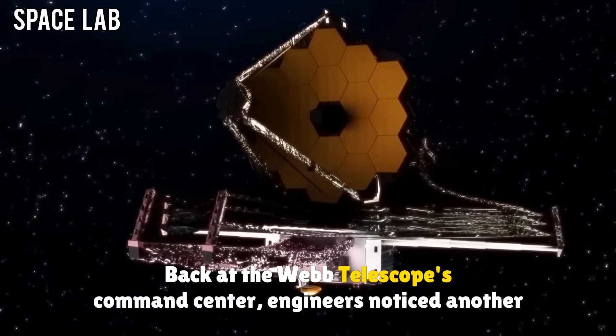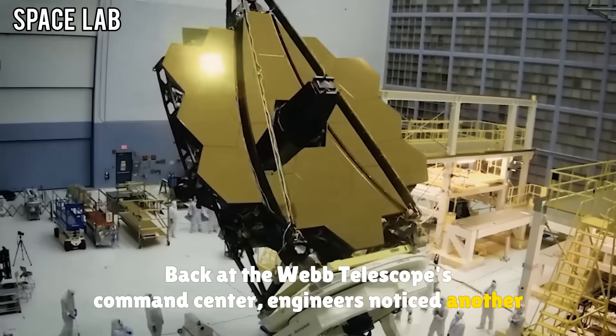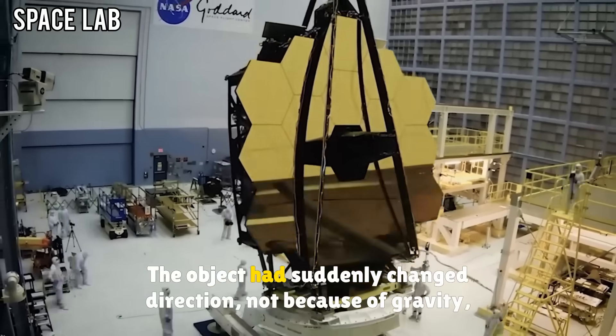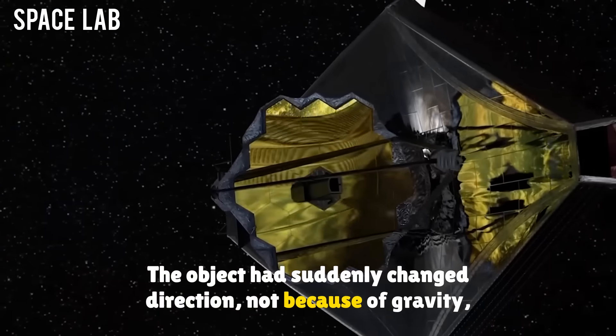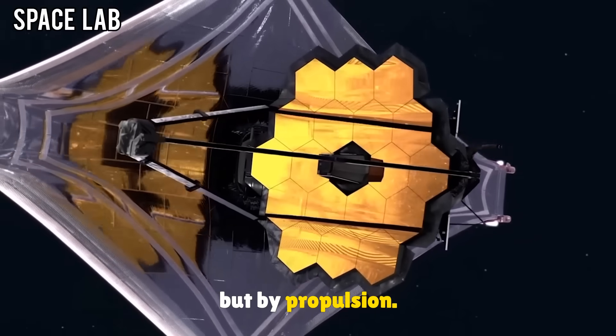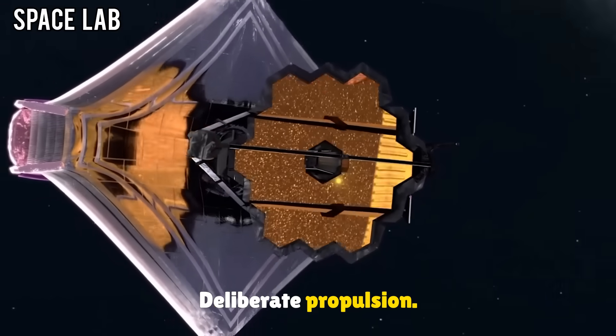Back at the Webb Telescope's command center, engineers noticed another anomaly. The object had suddenly changed direction, not because of gravity, but by propulsion. Deliberate propulsion. It was then that the real fear began.